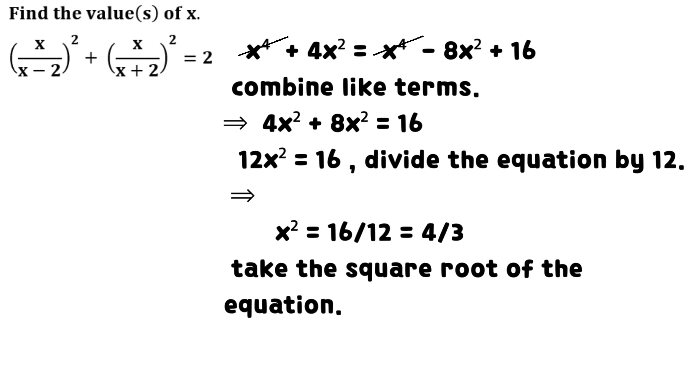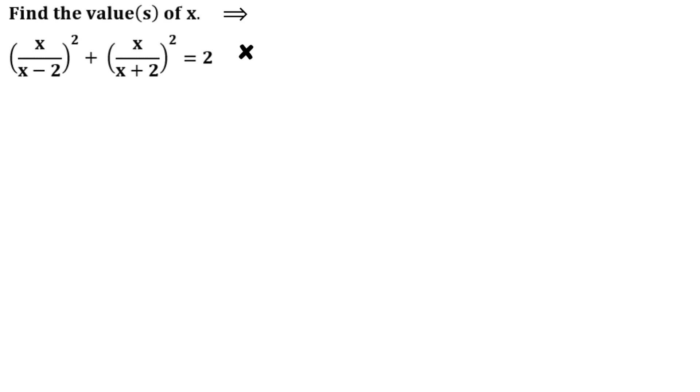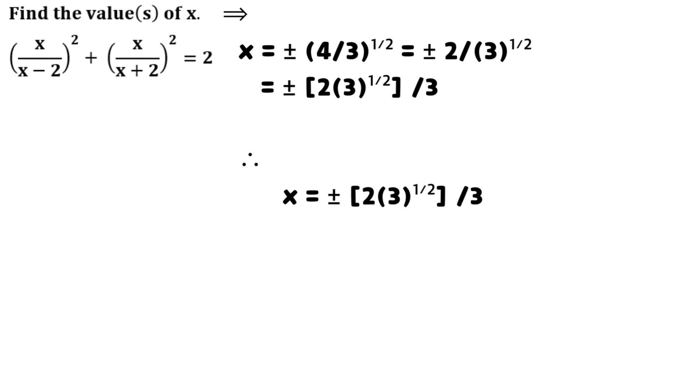Take the square root of the equation. This implies that x equals plus or minus 2 divided by the square root of 3, which equals plus or minus the product of 2 and the square root of 3, all divided by 3.